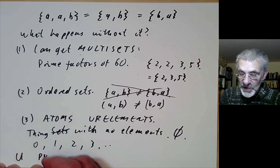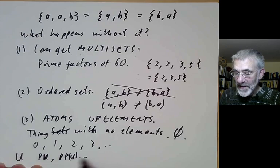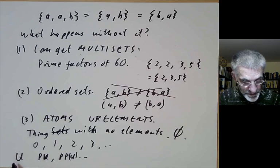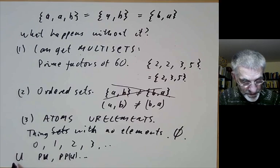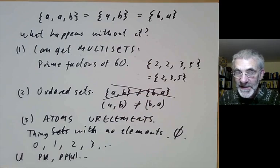So what you would do is you would start with a set of atoms or ur-elements U and then you would take the power set of U and the power set of the power set of that and then you would sort of continue this transfinitely and build up a sort of model of set theory which satisfies all the axioms of Zermelo-Fraenkel set theory except the axiom of extensionality.